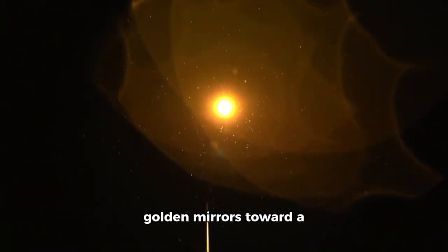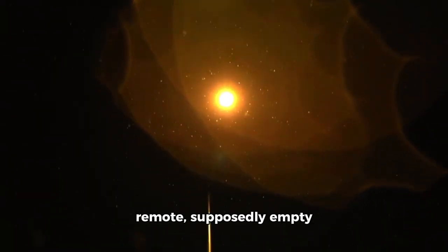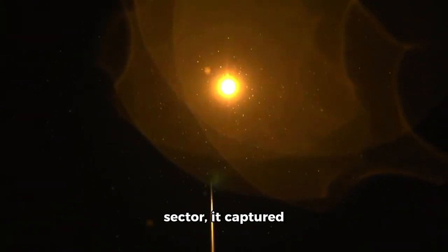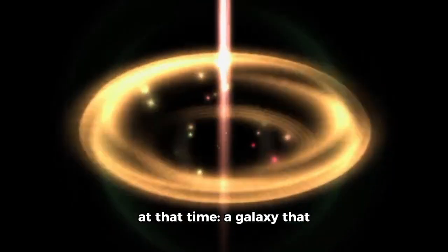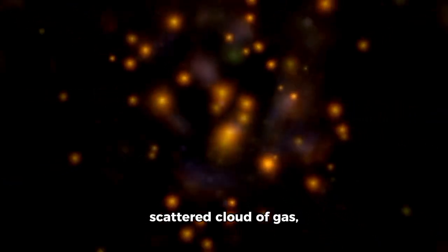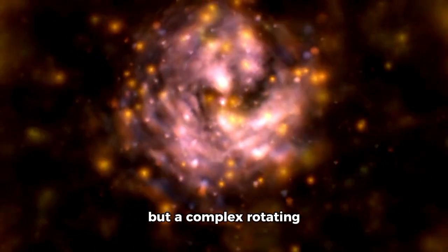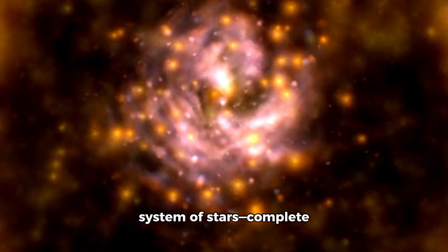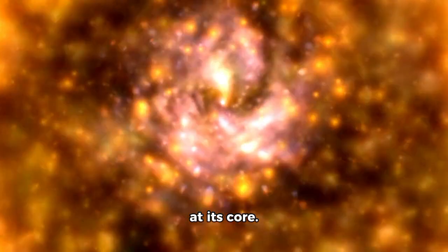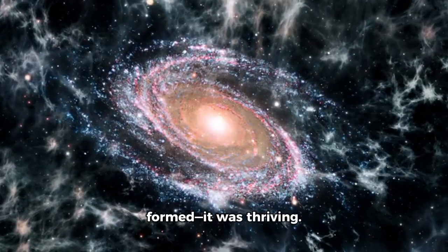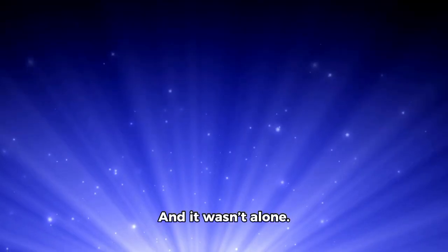But when Webb turned its golden mirrors toward a remote, supposedly empty sector, it captured something from the sky that should never have existed at that time: a galaxy that was fully developed. Not a faint smudge, not a scattered cloud of gas, but a complex rotating system of stars complete with spiral arms and a supermassive black hole at its core. This galaxy wasn't just formed, it was thriving. And it wasn't alone.